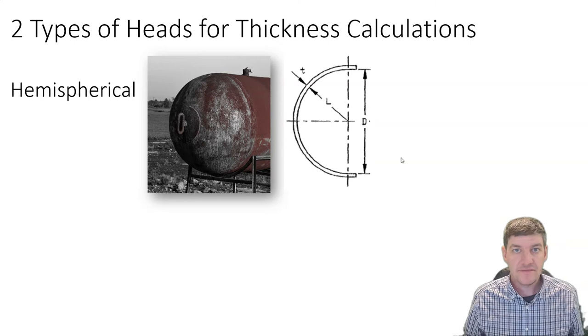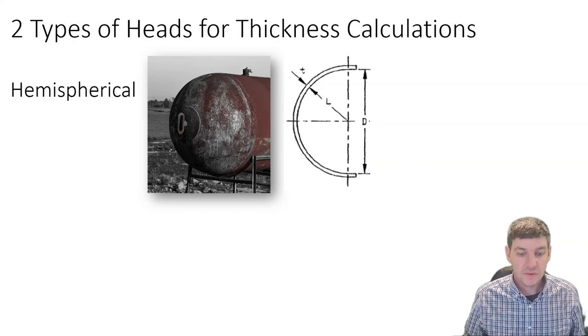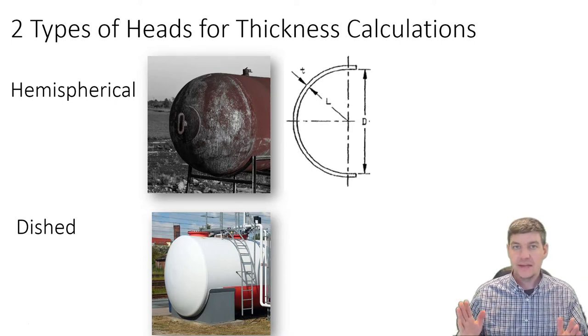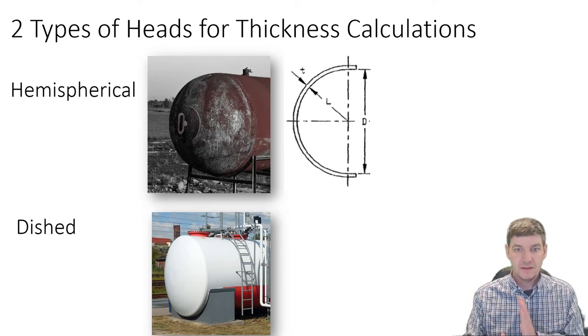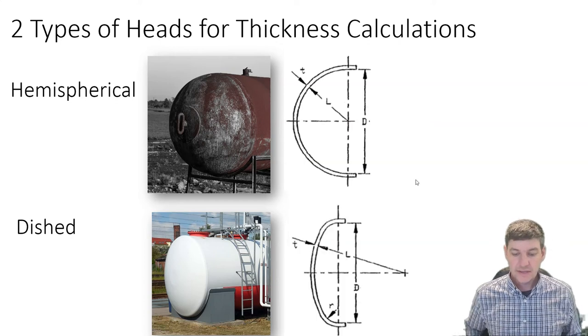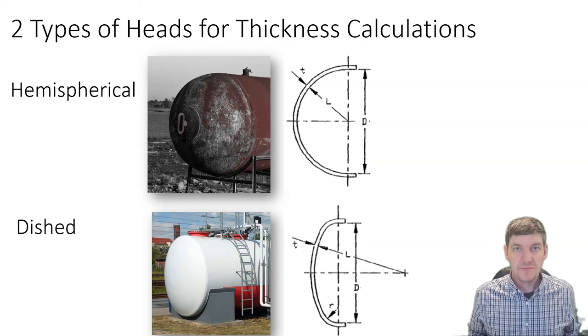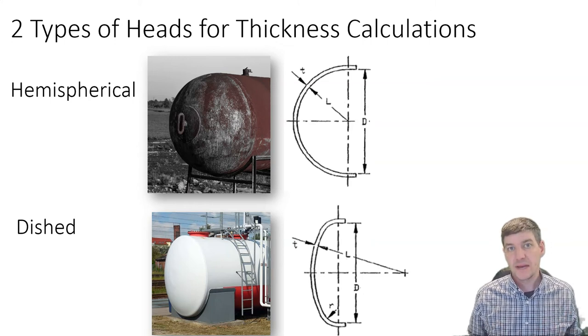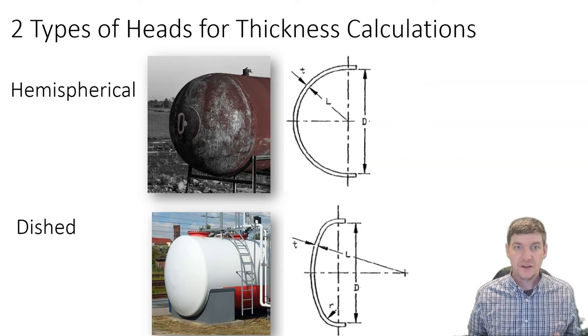We also have a flatter type of head which we call a dished head, one where we have a more flat profile. It looks like a couple different radiuses - we have a more extreme bend to it, and then after that we have a flatter profile.